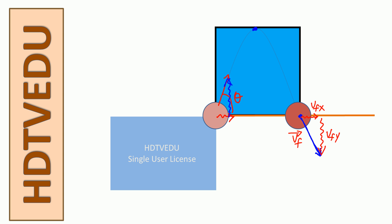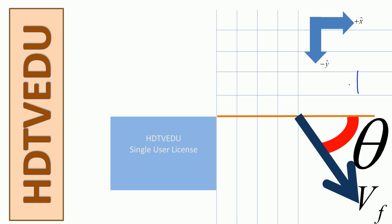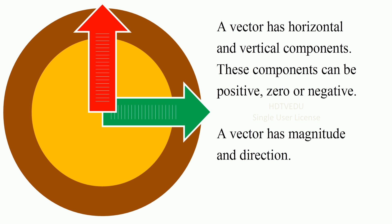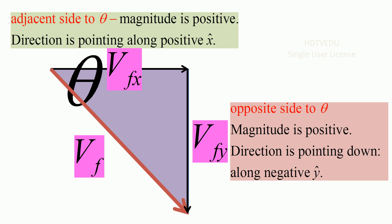What are Vfx and Vfy? Vfx is the horizontal component, and Vfy is the vertical component of the vector Vf. We define our positive x and positive y as to the right and vertically up, so negative y is vertically down. A vector has horizontal and vertical components — these components can be positive, zero, or negative. A vector has magnitude and direction. If you make the triangle for the velocity vector Vf with the horizontal Vfx and the vertical Vfy,